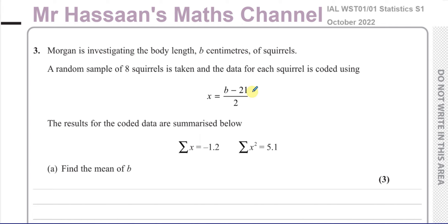The question says: Morgan is investigating the body length b centimetres of squirrels. A random sample of eight squirrels is taken and the data for each squirrel is coded using x equals b minus 21 over 2. The results for the coded data are summarised below: the sum of all the coded data is minus 1.2, and the sum of the squares of all the coded data is 5.1.